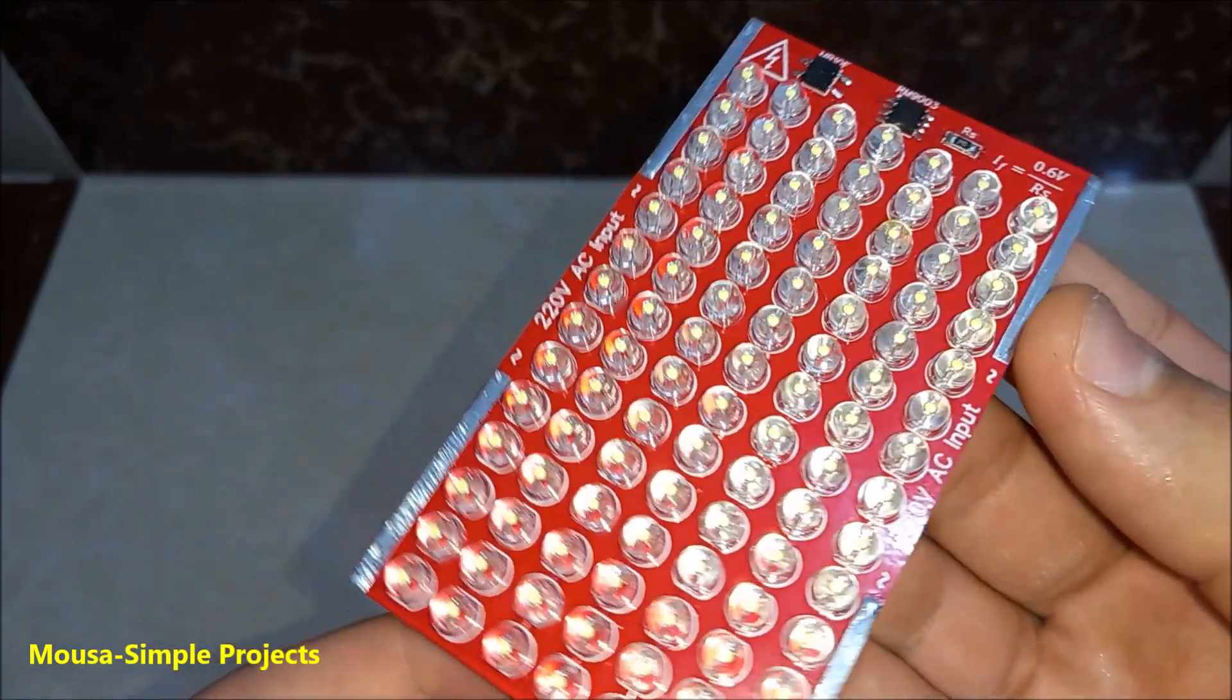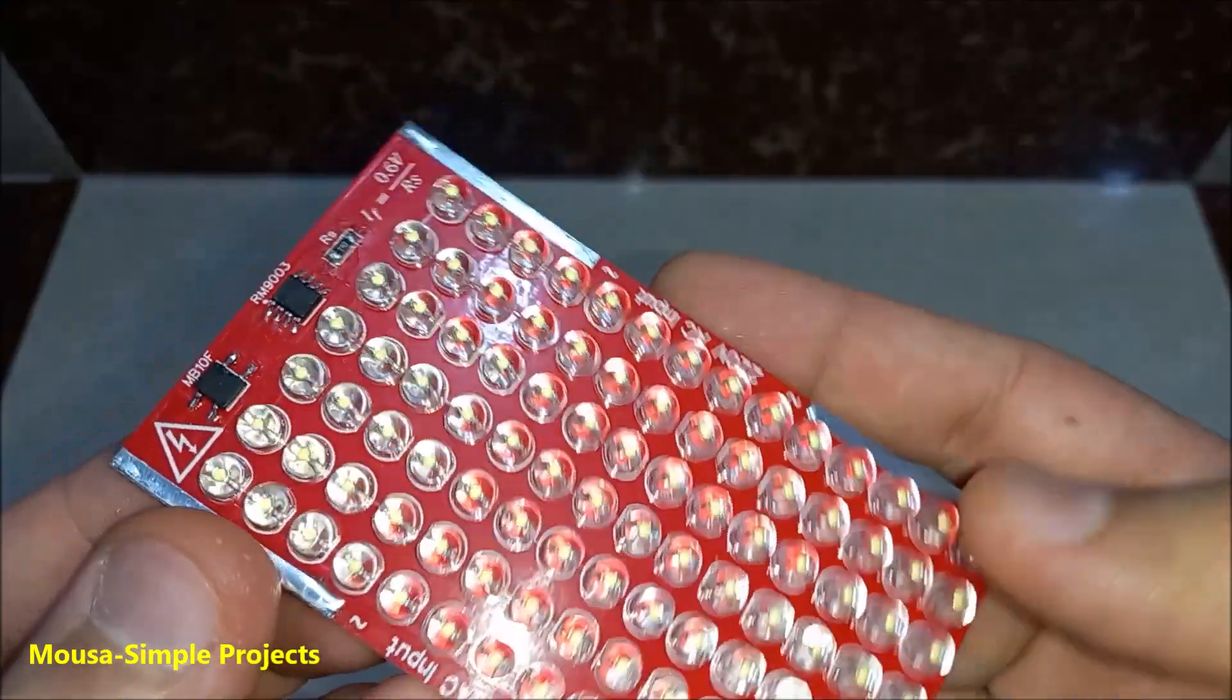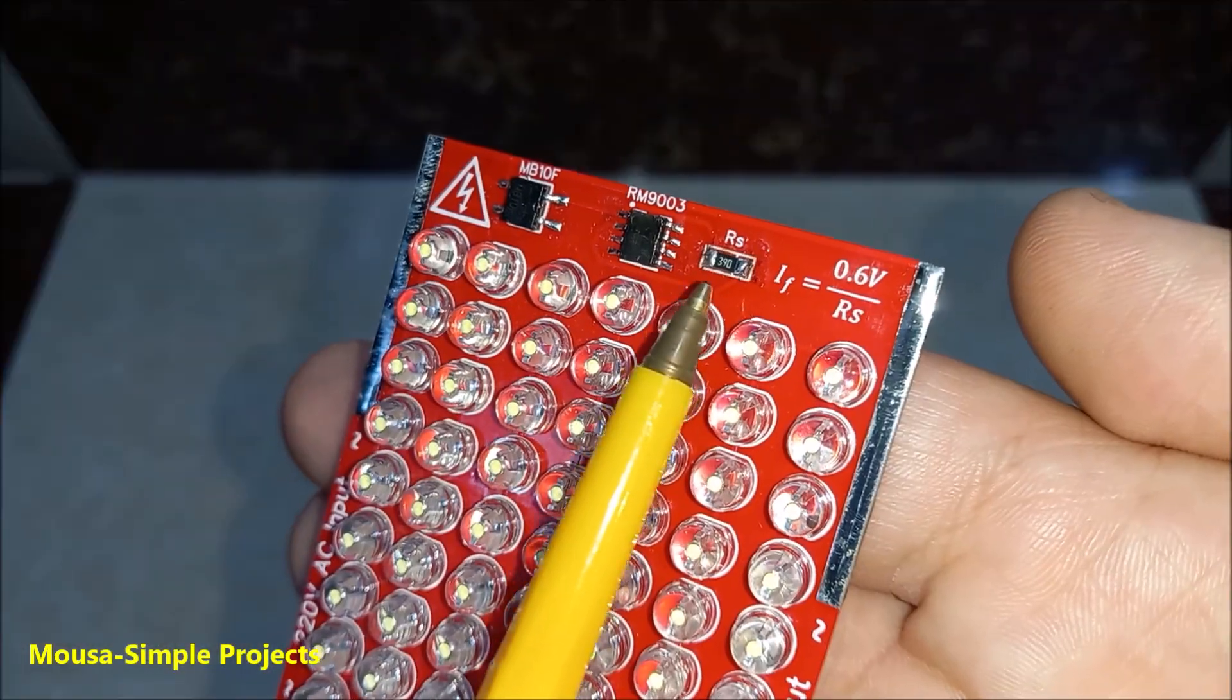I ordered the PCB from PCBWay. I need 15mA of current for my LEDs, so I used a 39 ohm resistor.